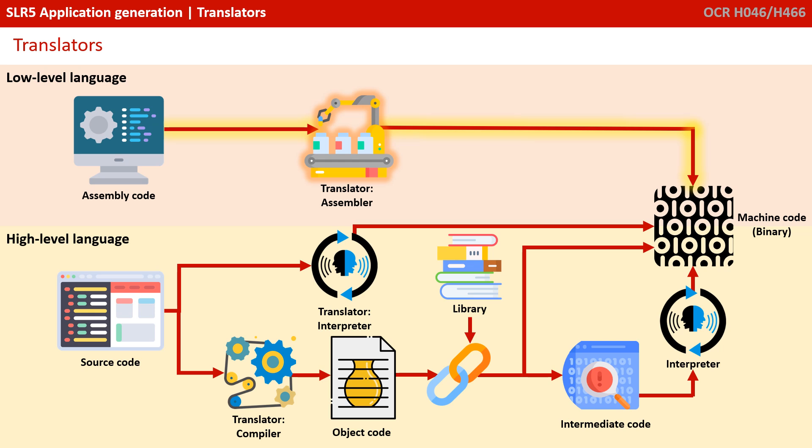Here in this diagram, we can see we've split the top half into what we call low-level languages and the bottom half into high-level. Low-level languages are written in what we call assembly code, which we've referenced in previous videos and look at in more detail in later videos. Assembly code is translated by what is called an assembler. It takes the mnemonics of the assembly code and translates them typically in a one-to-one relationship directly into machine code that can be executed on a specific processor architecture.